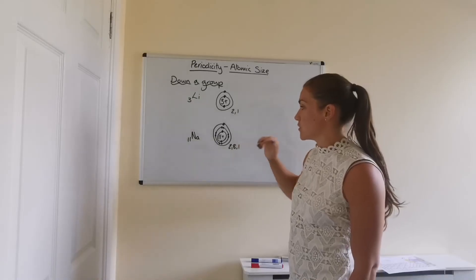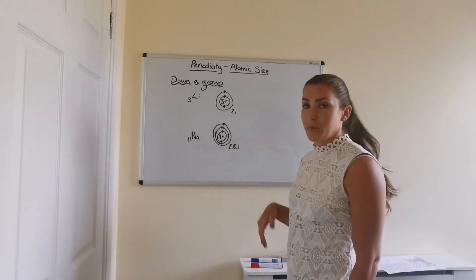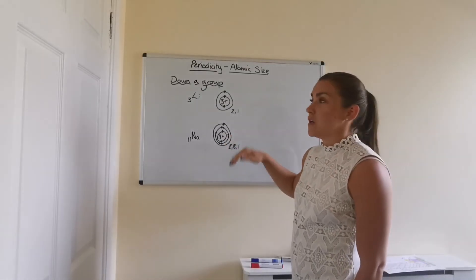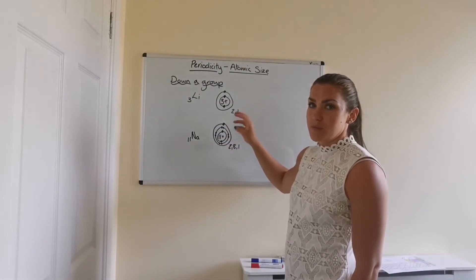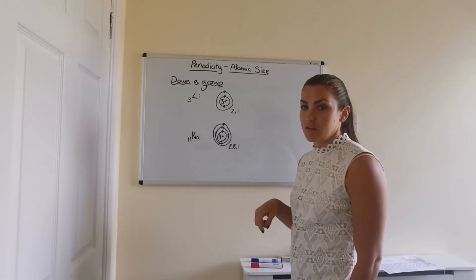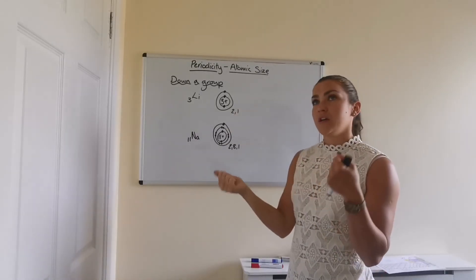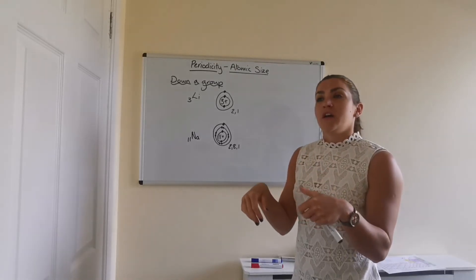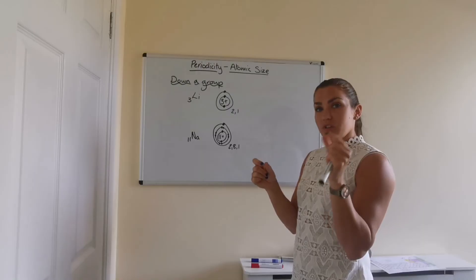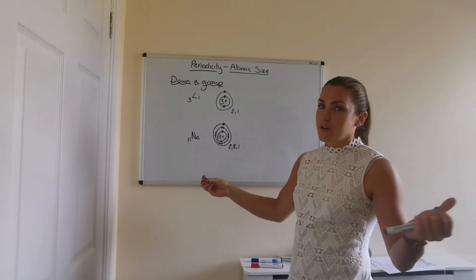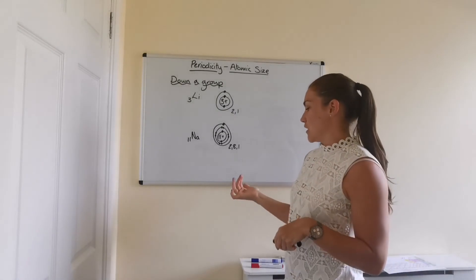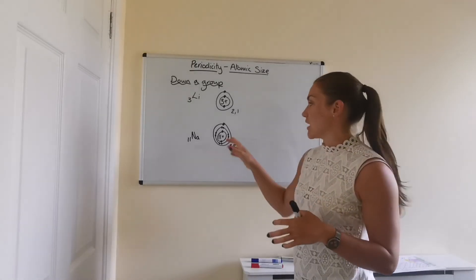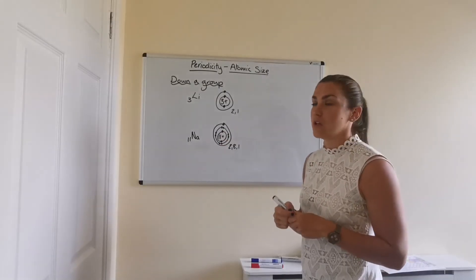And that's because of the increased numbers of occupied energy levels. So even though the nuclear charge is bigger, the outer electron is further away. So it's not going to be as attracted to the nucleus. Because if you think about it, if you have two magnets and you're putting the opposite ends next to each other, they won't attract until they get really close. So if they're really far away, there's no magnetic attraction. It's a similar thing with the atoms. The further away the electrons are from the nucleus, the less of an attraction the electrons will feel for the nucleus.